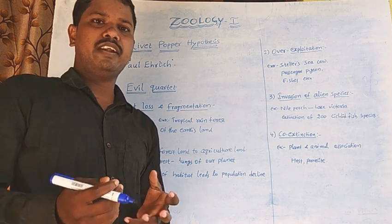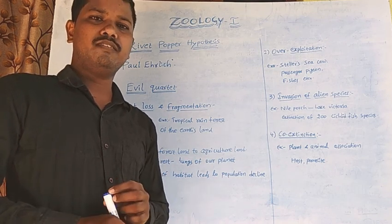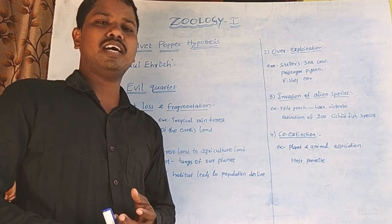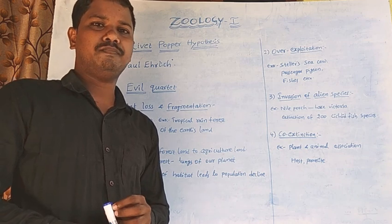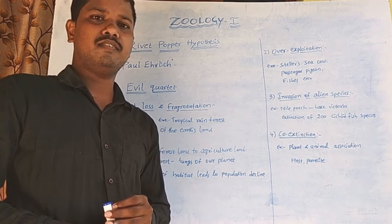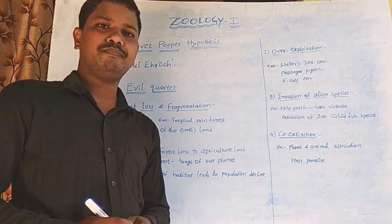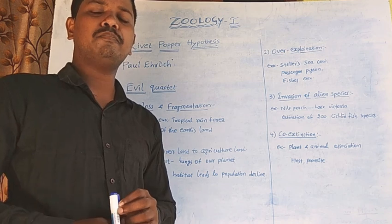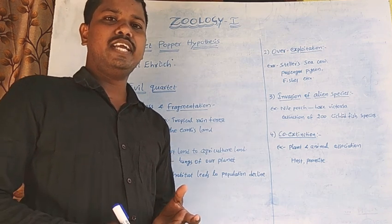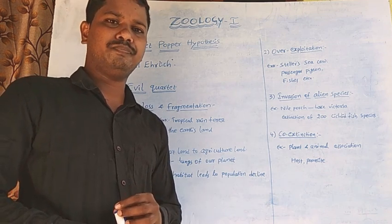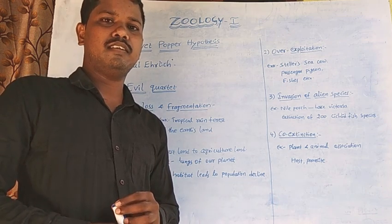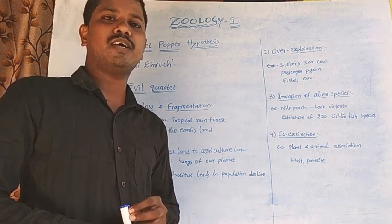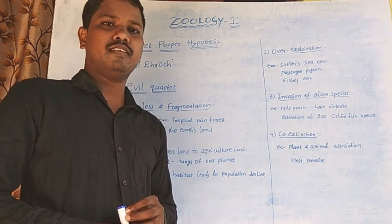If we remove the rivets from an aeroplane — such as seats — these rivets are unnecessary to the aeroplane. Similarly, if we remove unnecessary species from an ecosystem, the ecosystem will not be affected. But if we remove the rivets of the wings of the aeroplane, the aeroplane will be destroyed. Likewise, if we remove critical or important species from the ecosystem, the ecosystem will be destroyed.